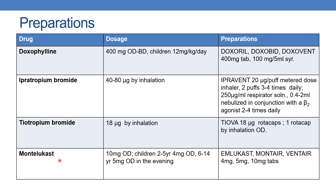The next drug is montelukast. The dose is 10 mg once daily. Children 2 to 5 years: 4 mg once daily, and 6 to 14 years: 5 mg once daily in the evening. Preparations are Emlucast, Montel, and Ventel, available as 4 mg, 5 mg, and 10 mg tablets.